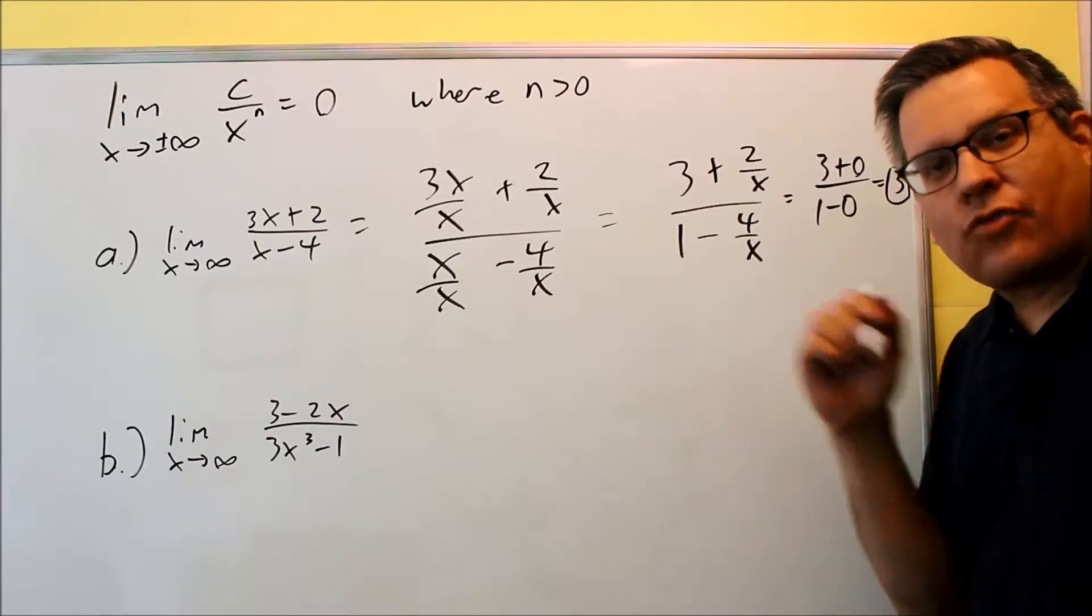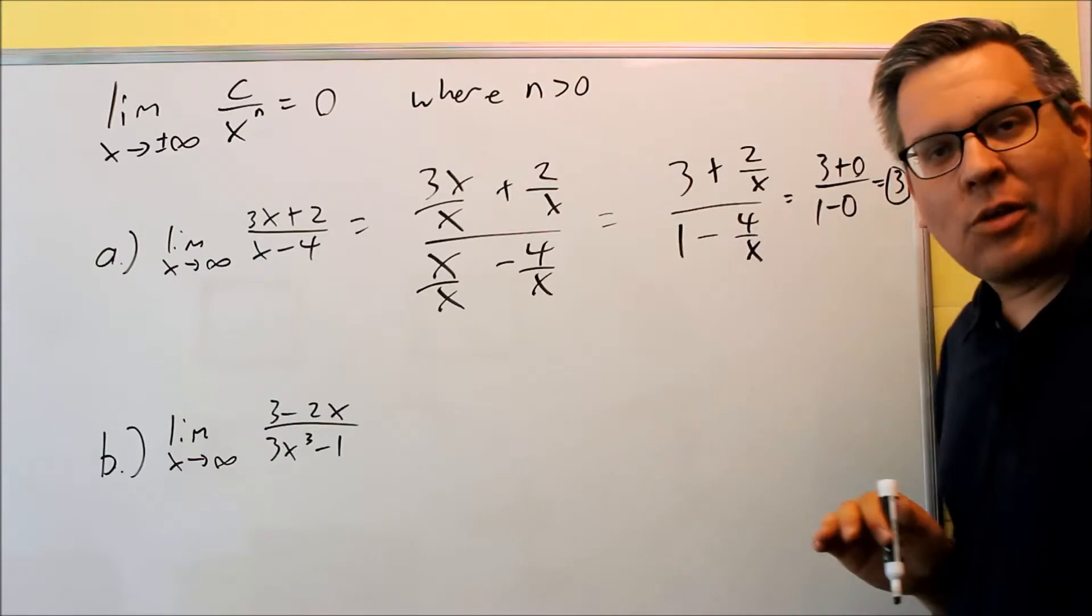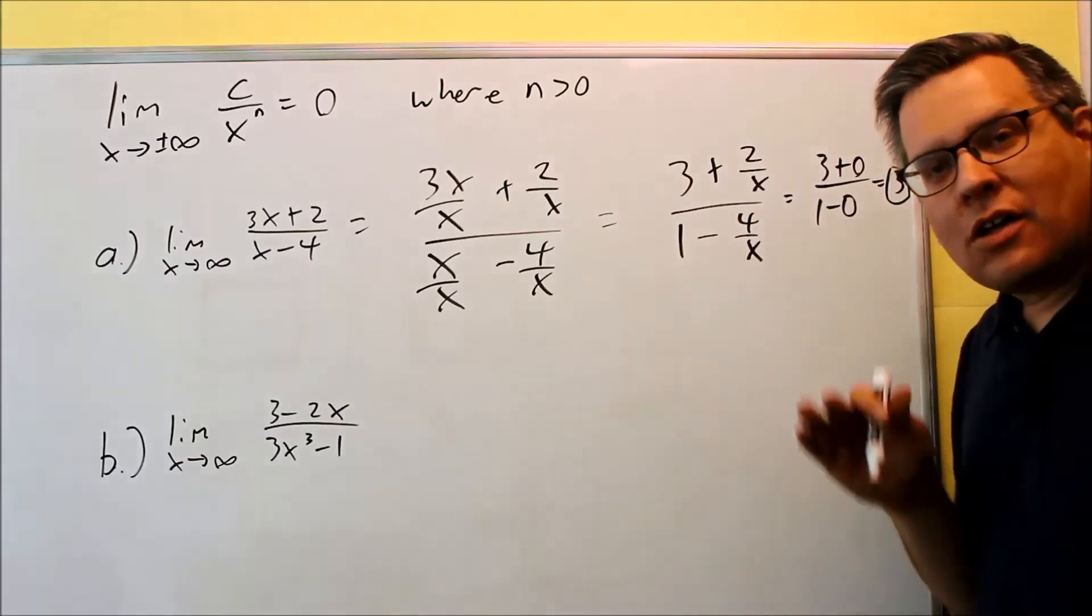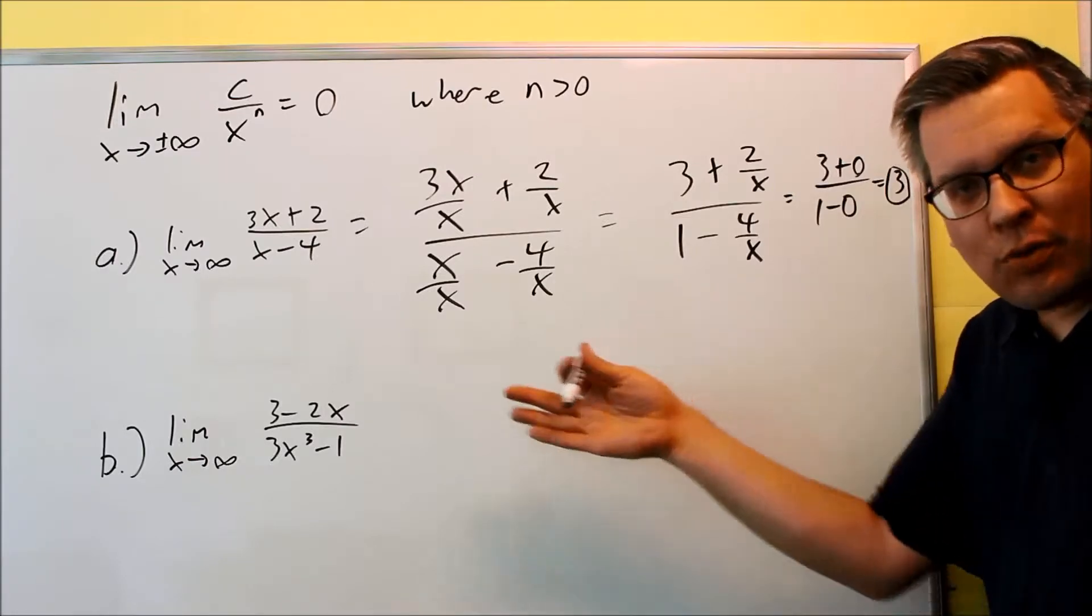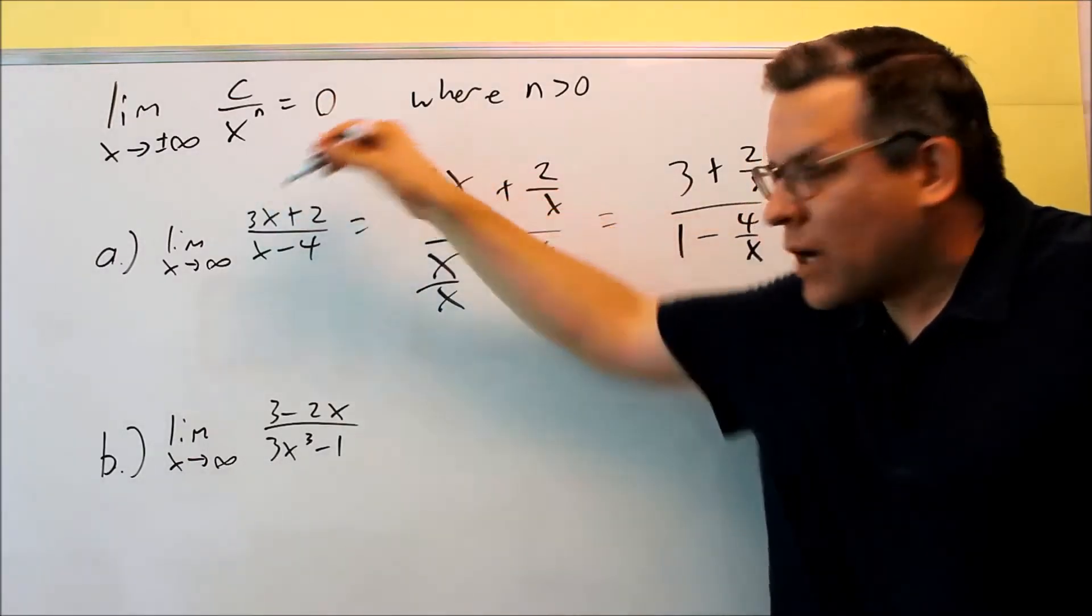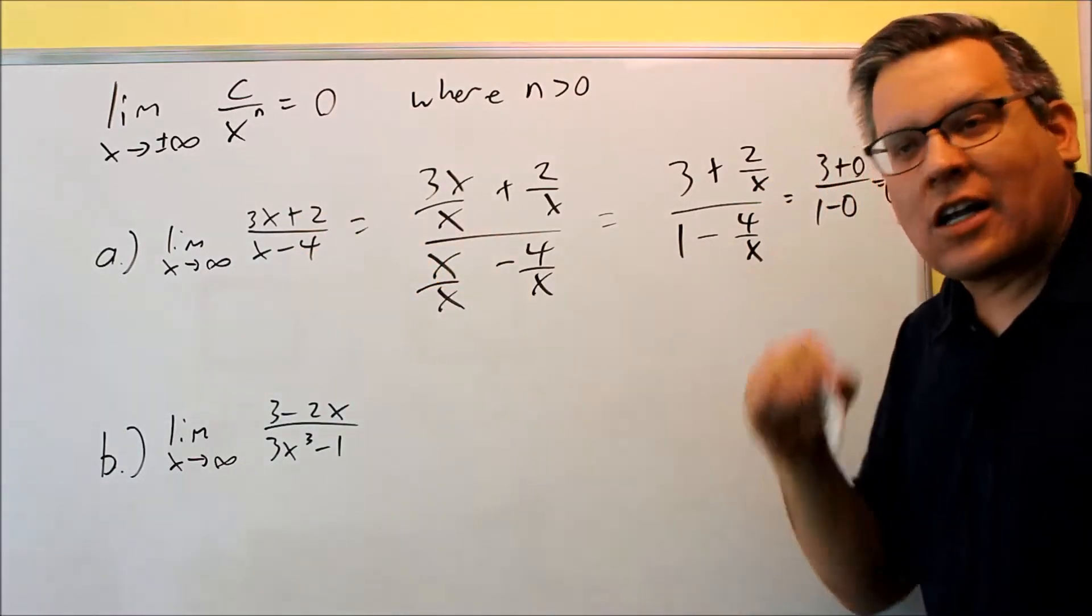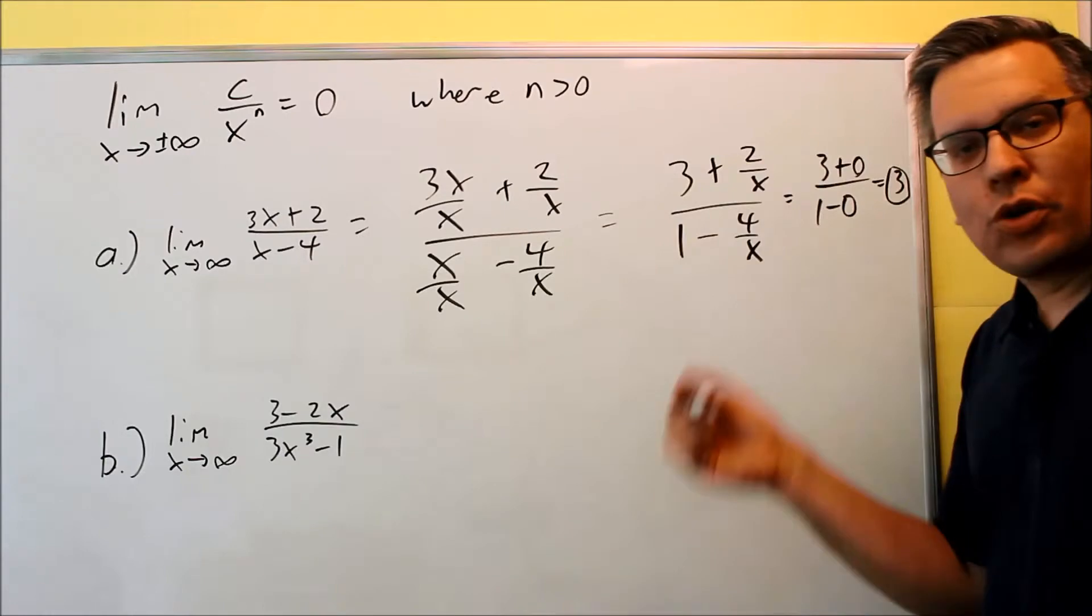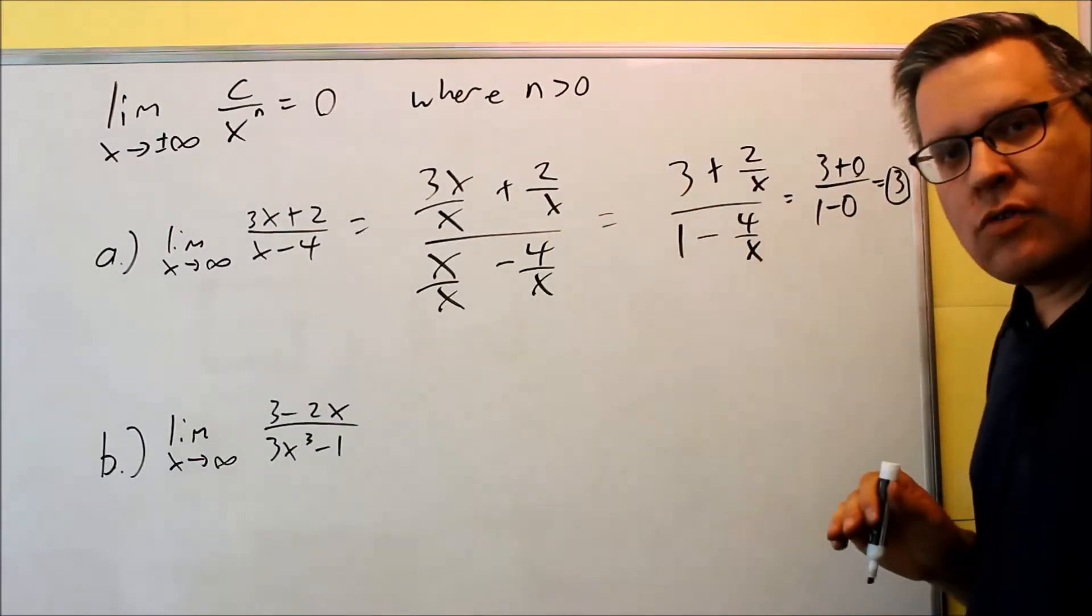Now, back in precalculus, we had different rules for highest power on top and highest power on the bottom. I don't know if you remember that, but there were the rules for finding out what the horizontal asymptote would be. Now, if we did apply that to this problem, highest power on top is an X, the highest power on the bottom is a 1. When the highest powers match, you're dividing the lead coefficients, so 3 divided by 1 would, in fact, give you 3.